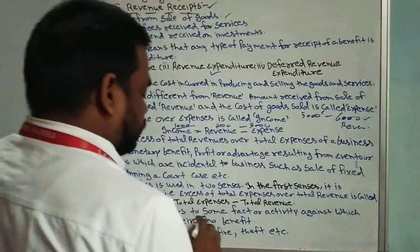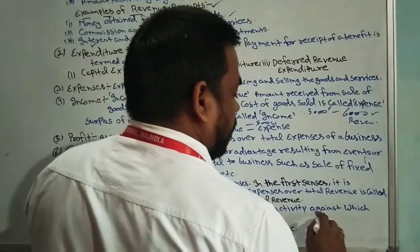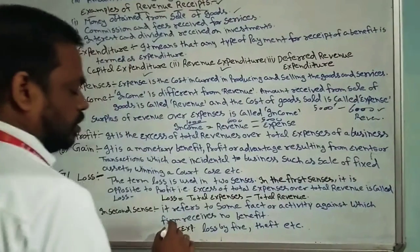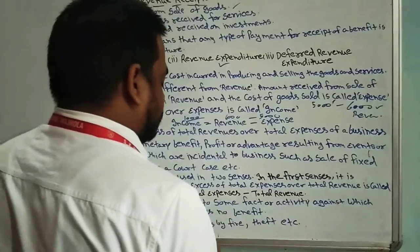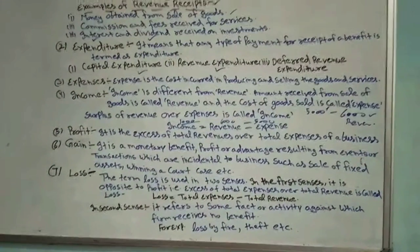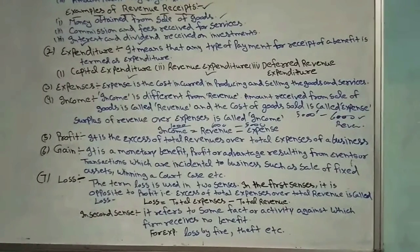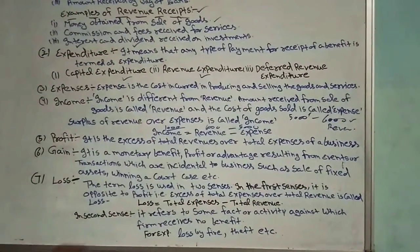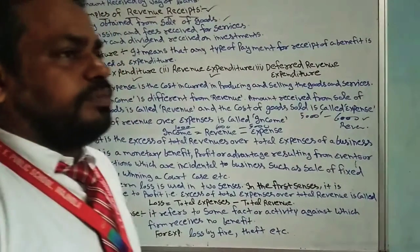Loss in the second sense refers to some fact or activities against which the firm receives no benefits. In the case of these losses, there are no benefits. For example, loss by fire and loss by theft — these are losses in the second sense.